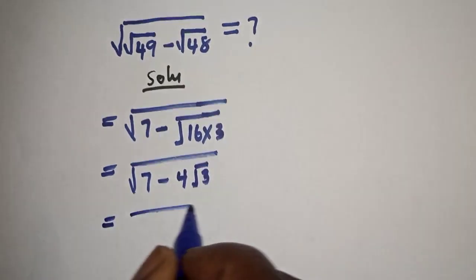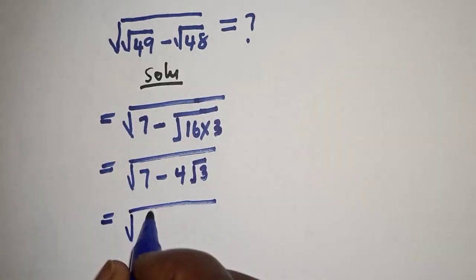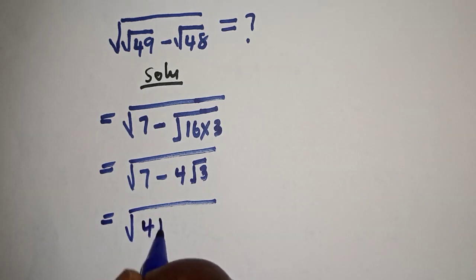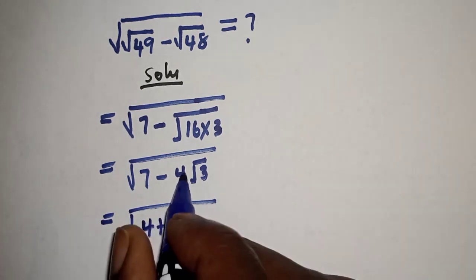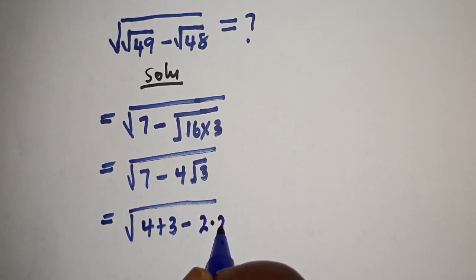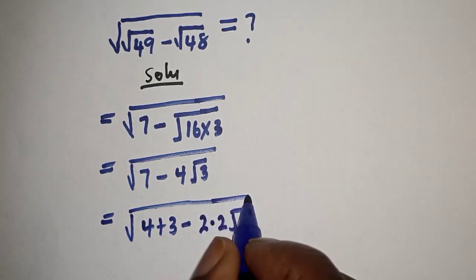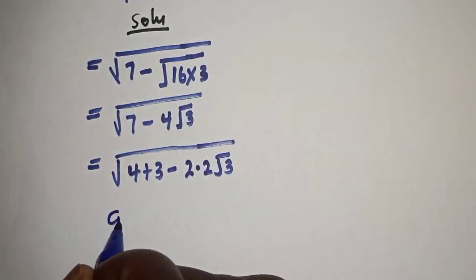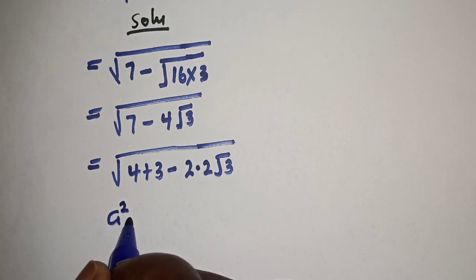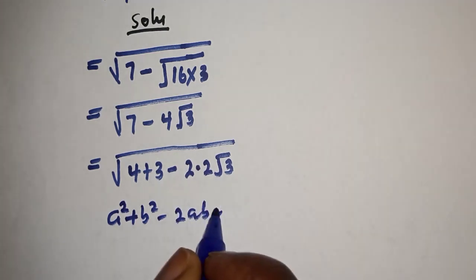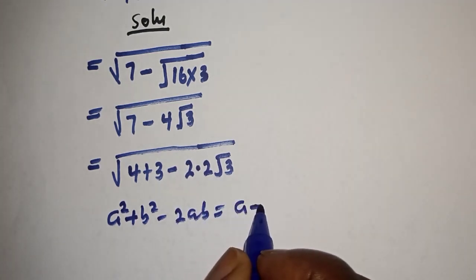This is equal to square root of: 7 can be written as 4 plus 3, minus 2 multiplied by 2 root 3. Now take note that if you have a squared plus b squared minus 2ab, this is equal to a minus b squared.